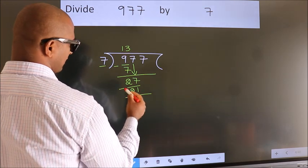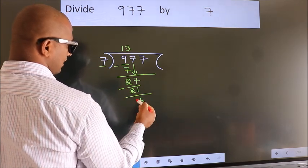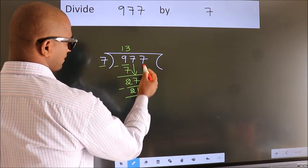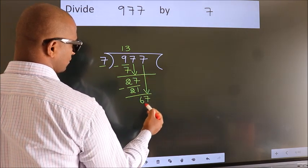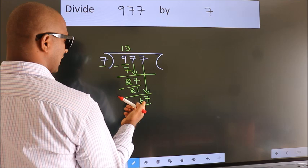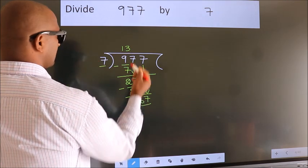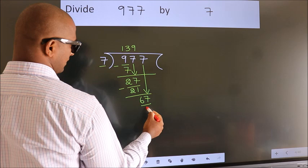Now we subtract. We get 6. After this, bring down the beside number. So 7 down. So 67. A number close to 67 in the 7 table is 7 nines, 63.